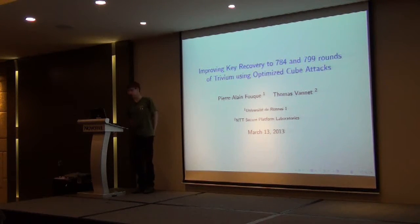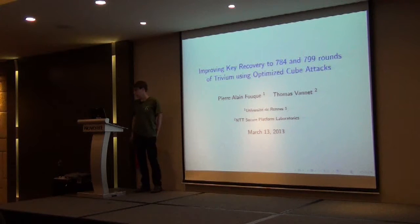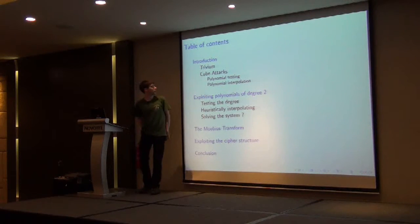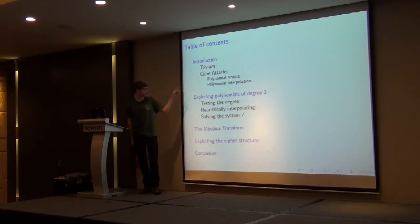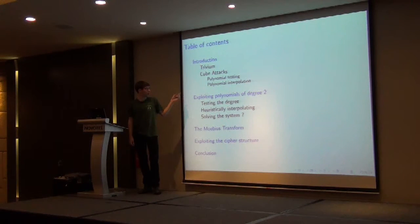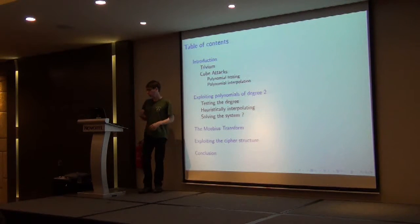This talk is entitled 'Improving to 7.84 and 7.99 rounds of Trivium using optimized cube attacks,' done with Kerala. My outline: I will define what Trivium is, the cube attacks, and then what optimizations I realized on the attack — first by explaining how we can exploit polynomials of degree two, how we use the Möbius transform to recover many cubes at once, and how we exploit the cycle structure to lower the density.